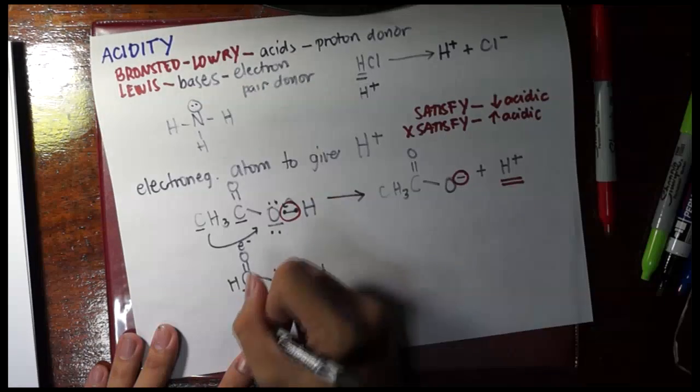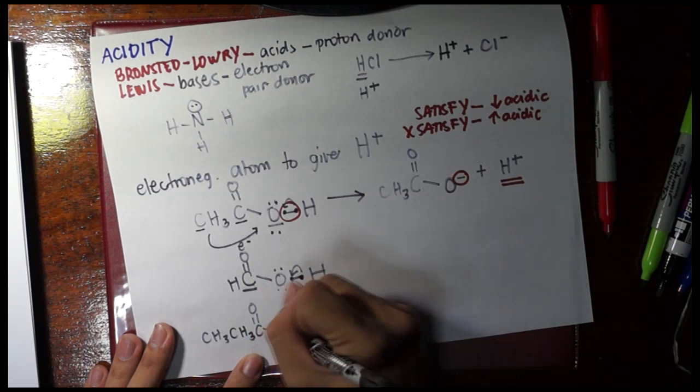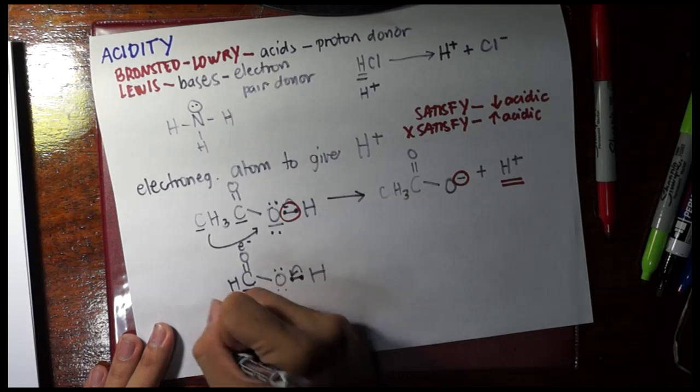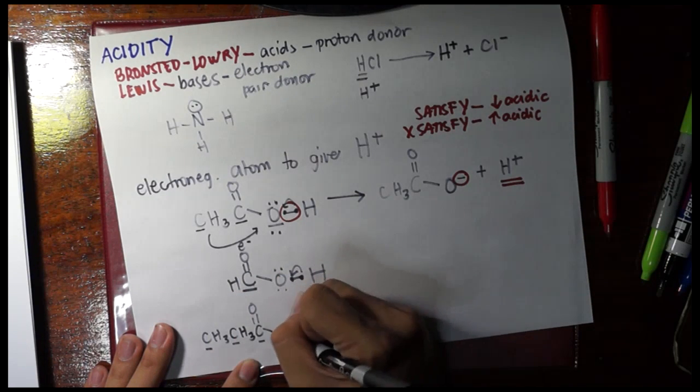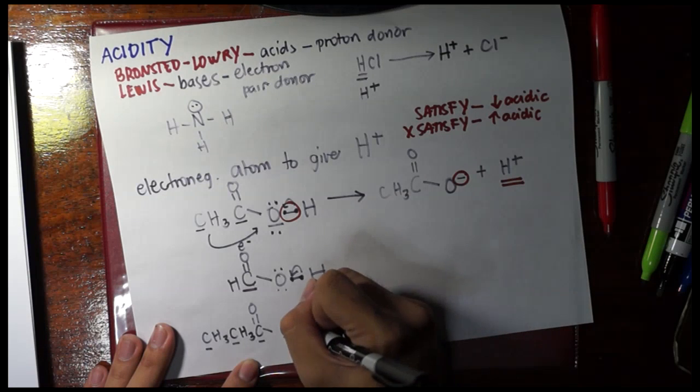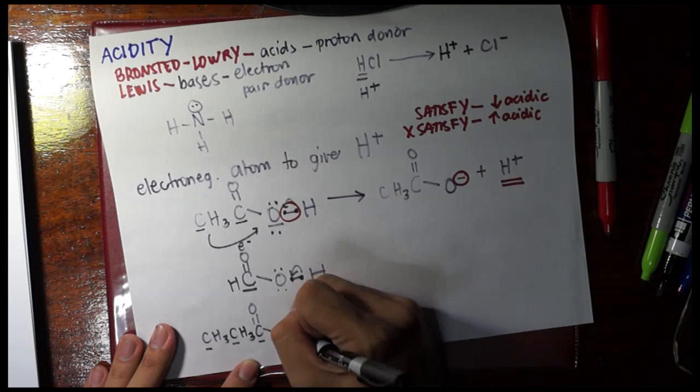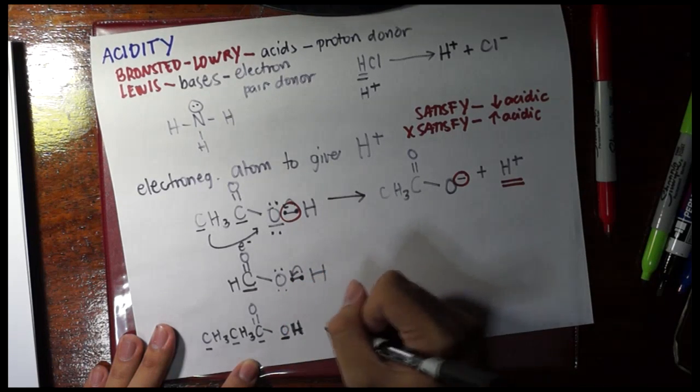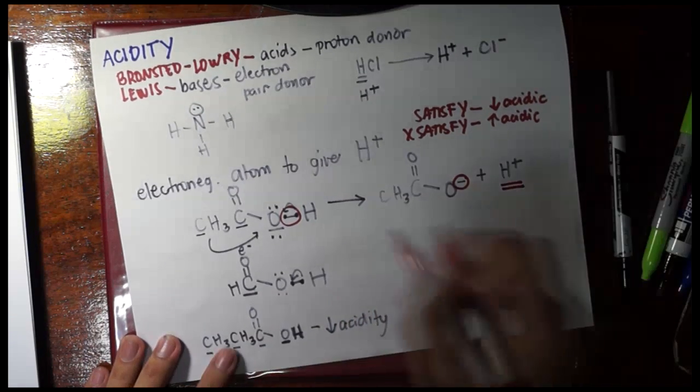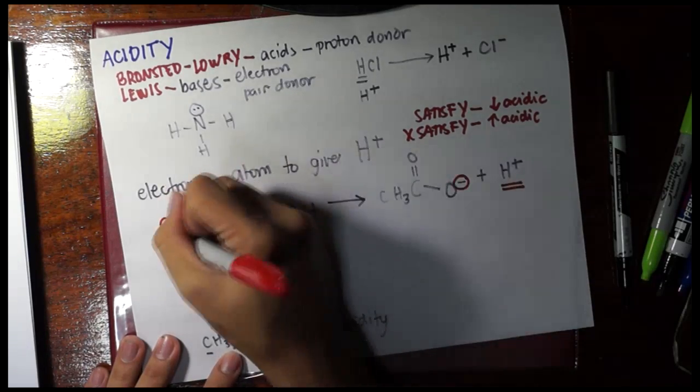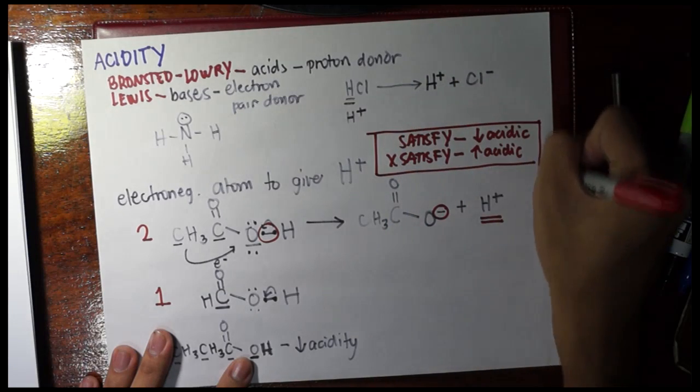So if we use an even longer acid, such as propanoic acid, we have here three carbons, then it would satisfy the oxygen more. The less it has to kick hydrogen, or the less necessity of the oxygen atom to kick away this hydrogen atom. That's why the acidity goes down. So if we would rank these three, this one is the most acidic, followed by this, followed by this. So this is the general rule for acidity of organic compounds.